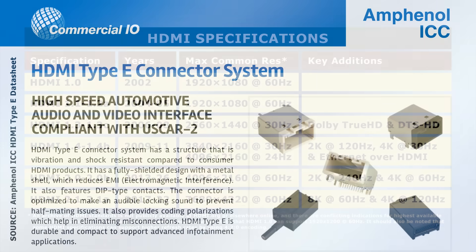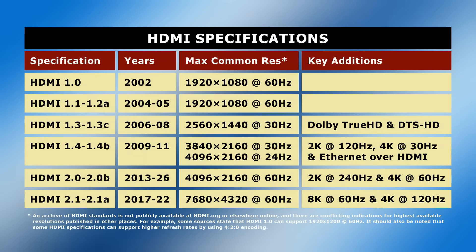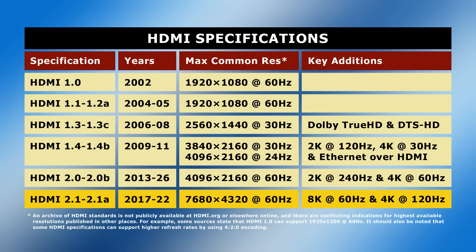Over the past 20 years, the HDMI standard has been constantly upgraded. Significant revisions included HDMI 1.4, which introduced support for both 4K and Ethernet over HDMI. In 2013, HDMI 2.0 also increased available frame rates at 2K to 240Hz and at 4K to 60Hz. And HDMI 2.1 now offers 4K at 120Hz, as well as 8K and even 10K resolutions.